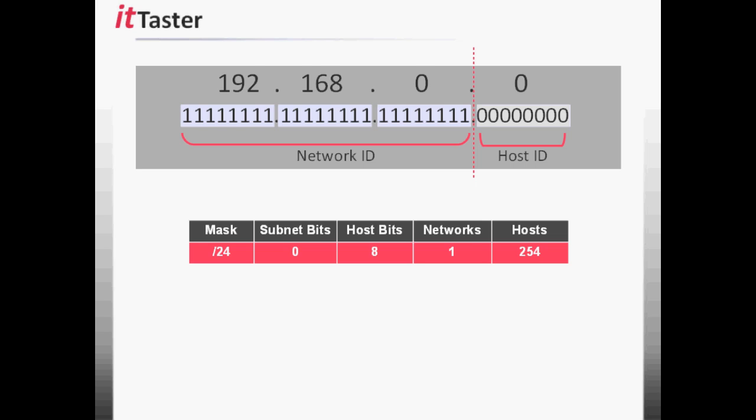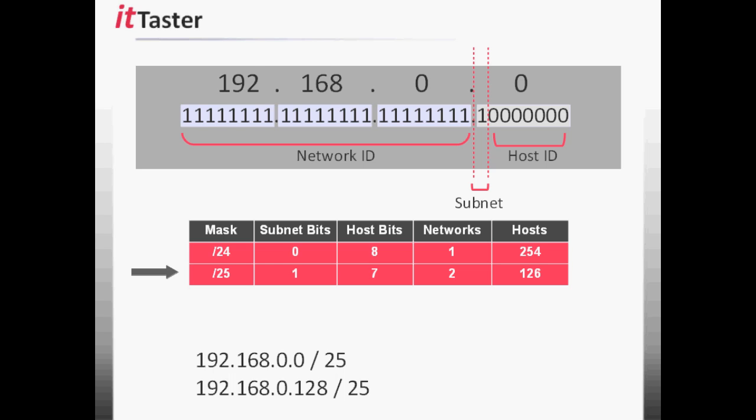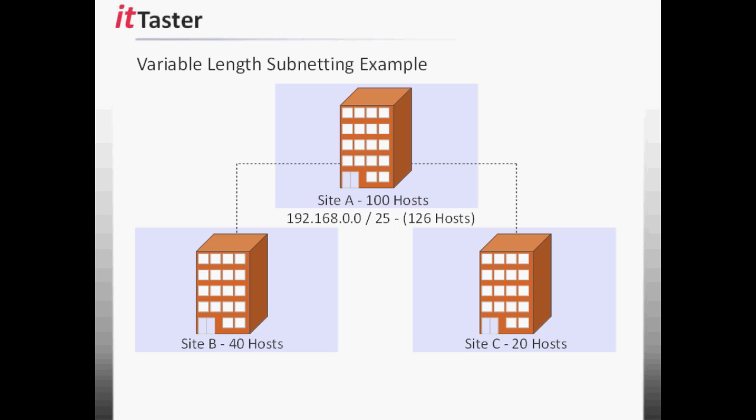If we subnet the network 192.168.0.0/24 by borrowing one host bit, the subnet mask is adjusted to 25 bits — slash 25. This creates two subnets: 192.168.0.0/25 and 192.168.0.128/25, with 126 valid hosts per subnet after allowing for the network address and broadcast address. So we assign the first subnet 192.168.0.0/25 to Site A. 126 valid hosts will accommodate Site A's requirement of 100 hosts. The second subnet 192.168.0.128/25 is put to one side for the next step.